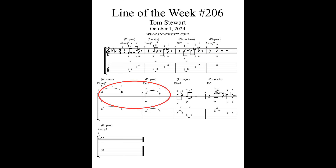Measures five and six are an example of augmentation — the time values of the original motif are increased. Conversely, the time values in measure seven are shortened; this is an example of diminution. Although the notes and rhythmic values are changed, the same number of notes — four — are contained in the ideas, providing continuity.